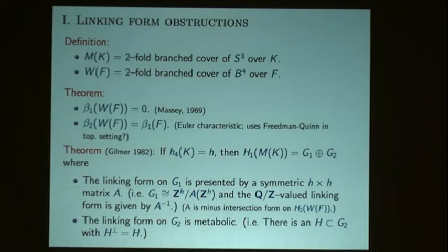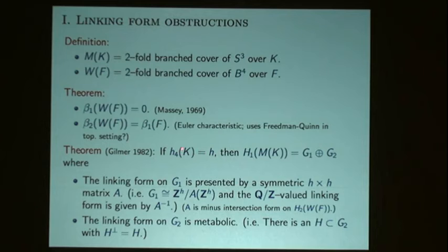The first result that feeds into understanding the four-genus is a theorem Pat Gilmer proved in 1982. It's really a consequence of his work — he was studying the orientable four-genus, but the argument applies in this setting as well. So we went back and looked at it. If you bound a surface of non-orientable genus H in the four-ball, then the homology of the three-manifold's two-fold branch cover splits into the direct sum of two groups.